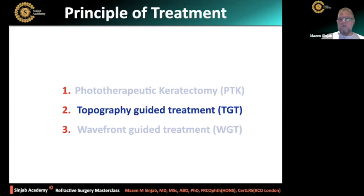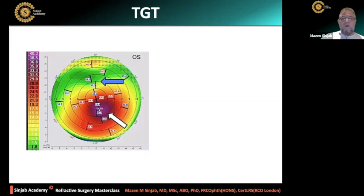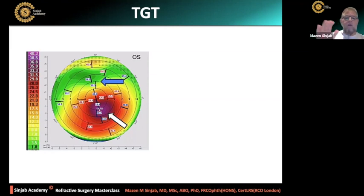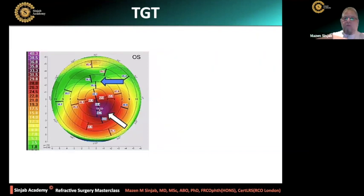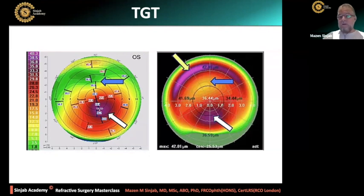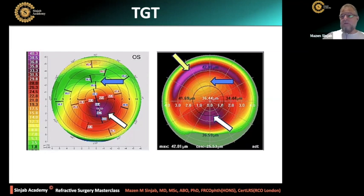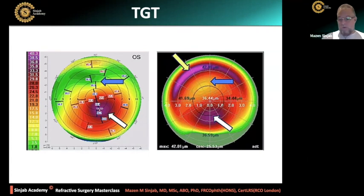The principle of topography-guided treatment is that we are going to ablate the protruded, high elevated area of the anterior corneal surface. We are going to flatten the steep area and steepen the flat area — so we make a balance. The steep should be ablated and the flat should be elevated. The profile ablates the cone, which is similar to myopic ablation, and ablates the periphery of the flat area, which is the same principle as hyperopic treatment.